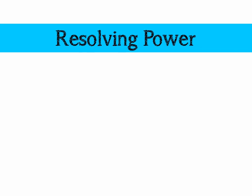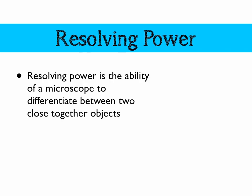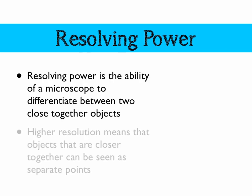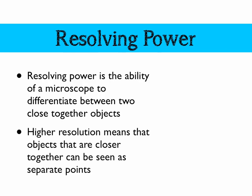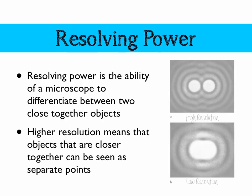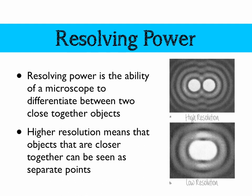Firstly, I'd like to define resolving power or resolution. This is the ability of a microscope to differentiate between two really close together objects or points of light. If a microscope has higher resolution, that means it can tell apart objects that are closer together — they can be seen as separate points. High resolution shows two distinct objects clearly, while low resolution causes those two objects to merge together into a blurry mess.